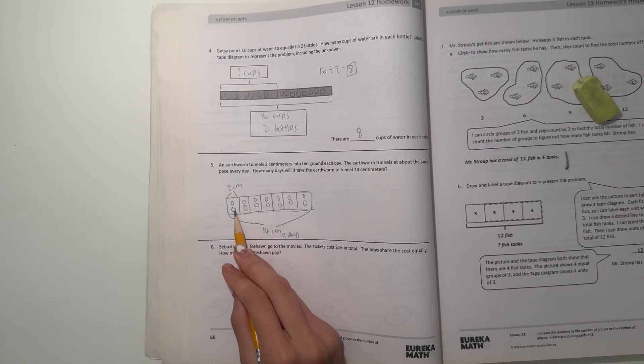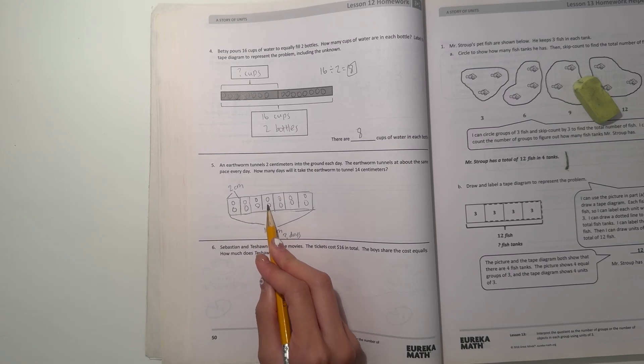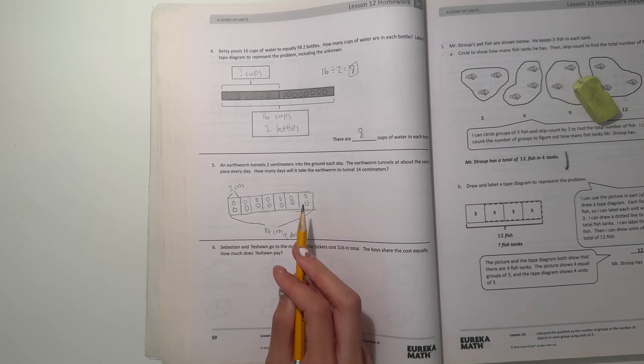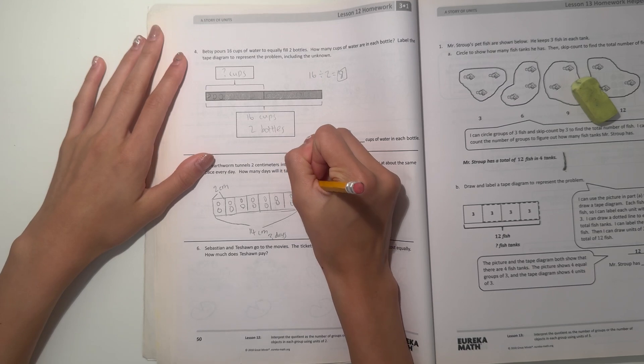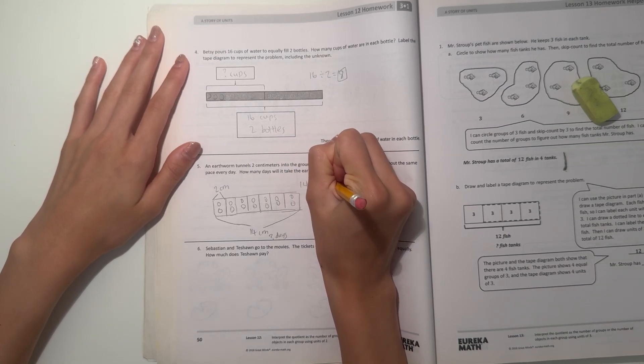So this takes us 1, 2, 3, 4, 5, 6, 7. So that means 14 divided by 2 equals 7.